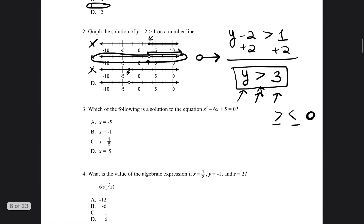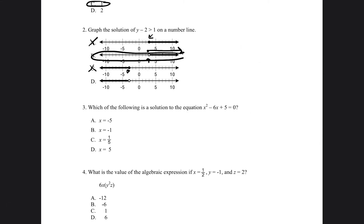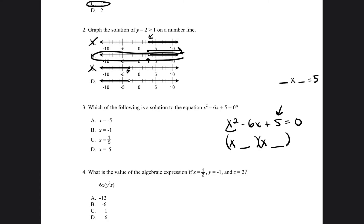Which of the following is the solution to the equation x squared minus 6x plus 5 equals 0? So x squared minus 6x plus 5 is equal to 0. Now I want to break it down into two binomials. I can break down the x squared by putting x and x. Then I have to figure out what numbers go inside — two numbers that multiply to equal 5, and also two numbers that when you add them equal that middle number, which is negative 6.